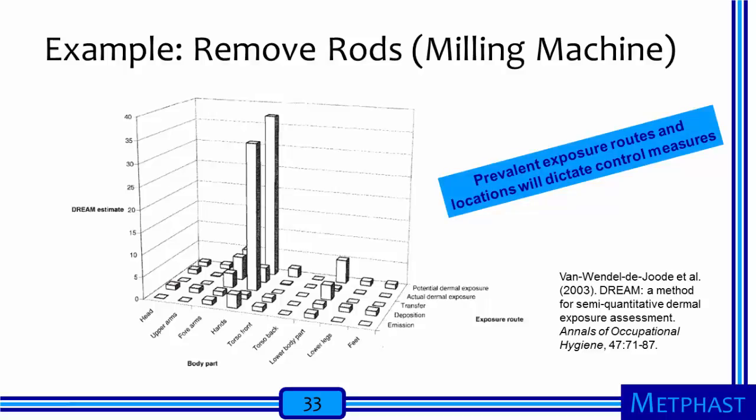The prevalent routes of exposure and body locations will dictate control measures. In this example, because transfer is most important, gloves and clothing that are protective are likely to reduce exposure substantially. We could also consider using a different type of cooling agent that is less toxic, or alter work practices to reduce contact with the cooling agent.